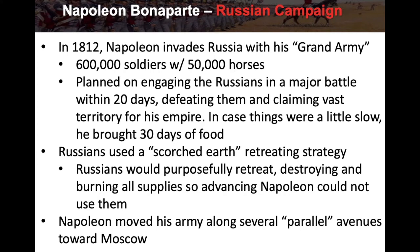The Russians used a scorched earth retreating strategy. As Napoleon advanced, the Russians did not stand and fight — instead, they retreated, destroying all crops, supplies, bridges, and anything else that could help Napoleon's army. They continued to retreat deeper and deeper into Russia to prevent Napoleon from using those resources and to draw him deeper in, stretching his supply lines.